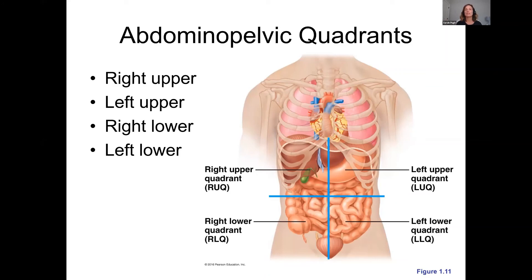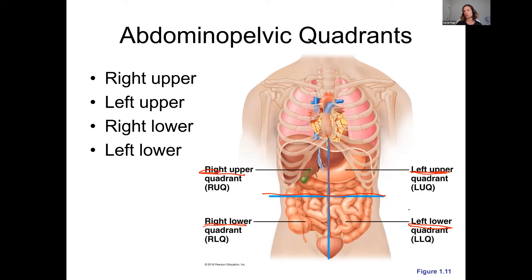Another way to divide the abdominal pelvic area is into four quadrants — you just draw a cross right through the belly button. This gives you a right upper quadrant, left upper quadrant, right lower quadrant, and left lower quadrant. You need to know both the nine regions and the four quadrants, since different healthcare settings may prefer one system. The quadrants are easy; the nine regions take a bit more learning.